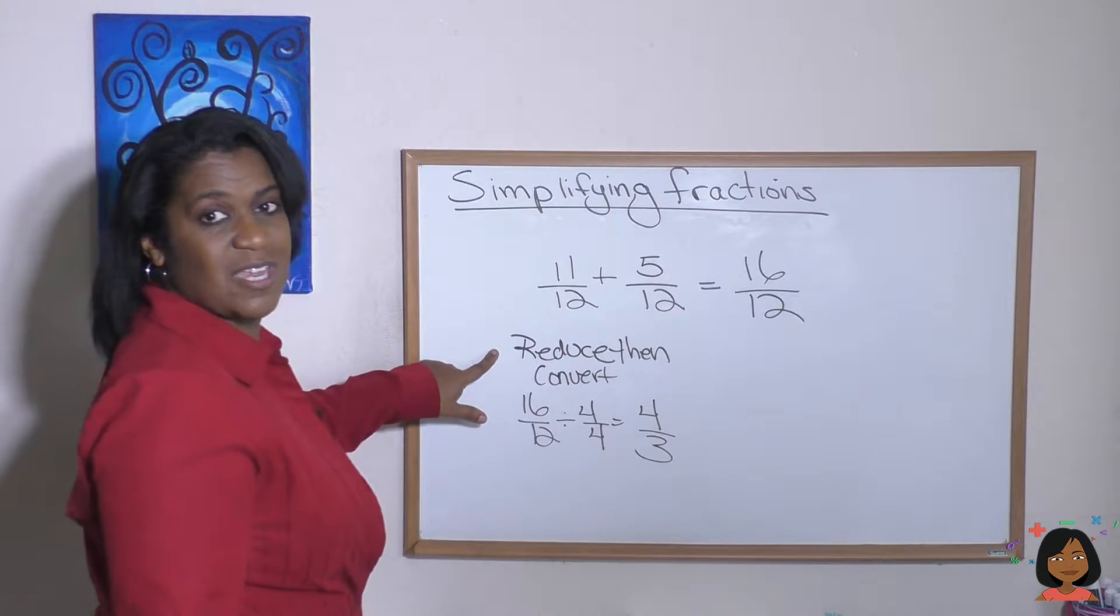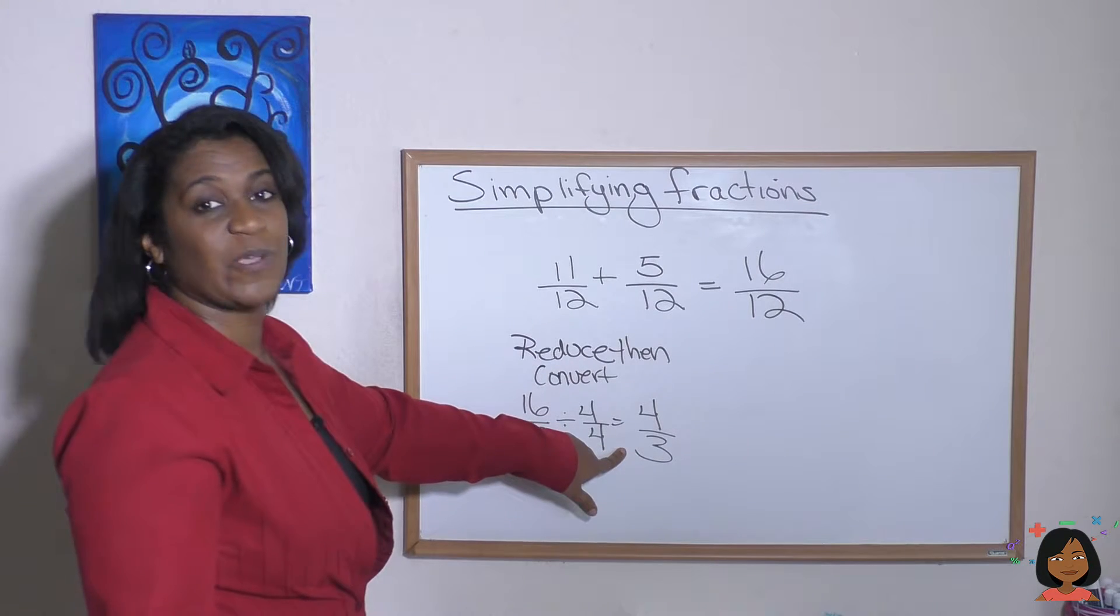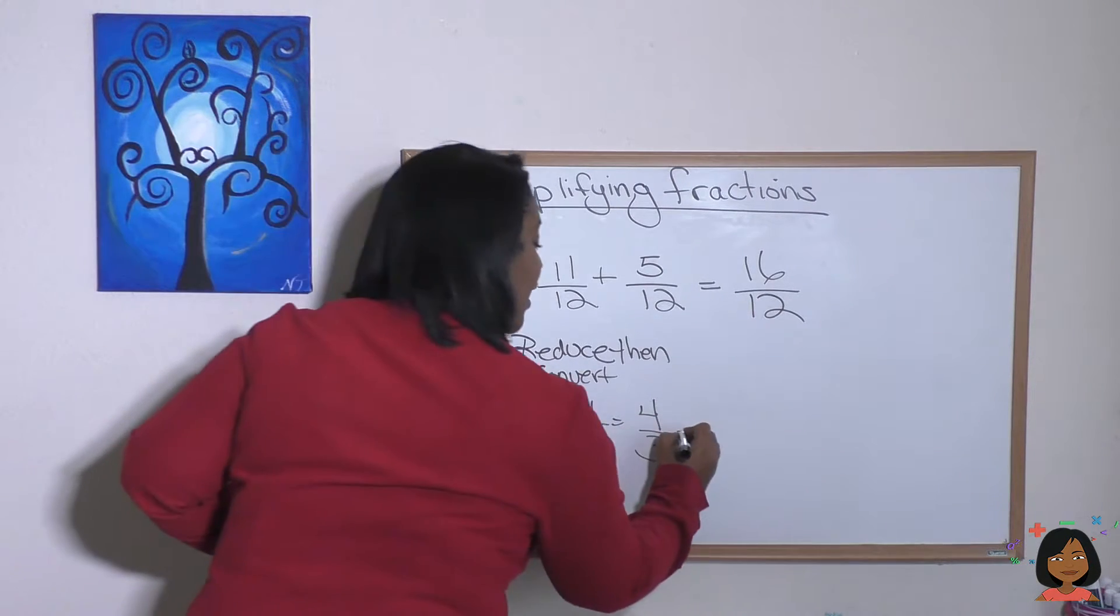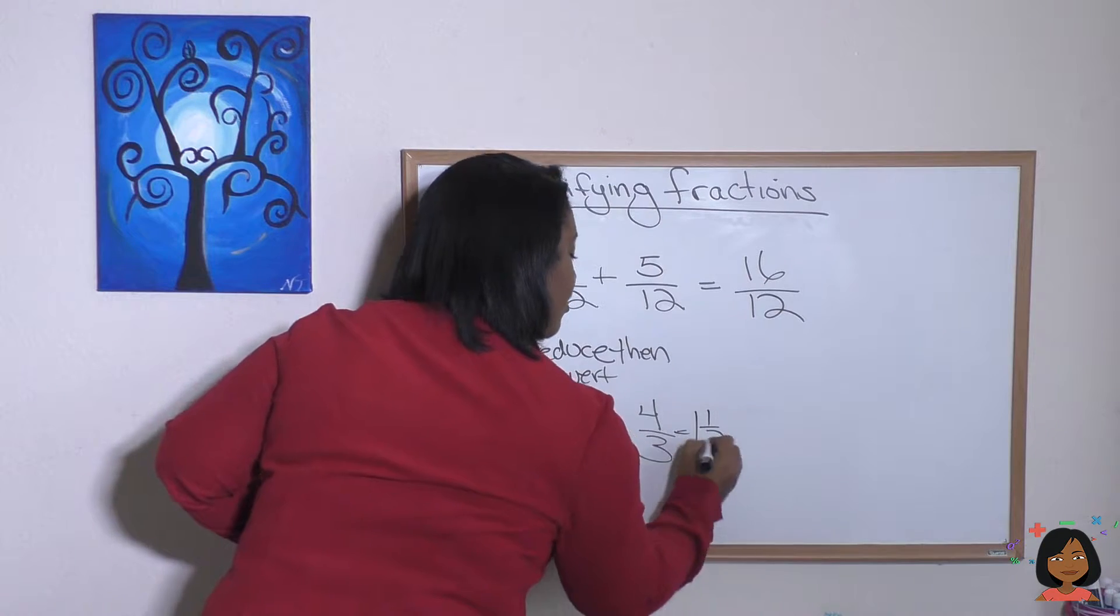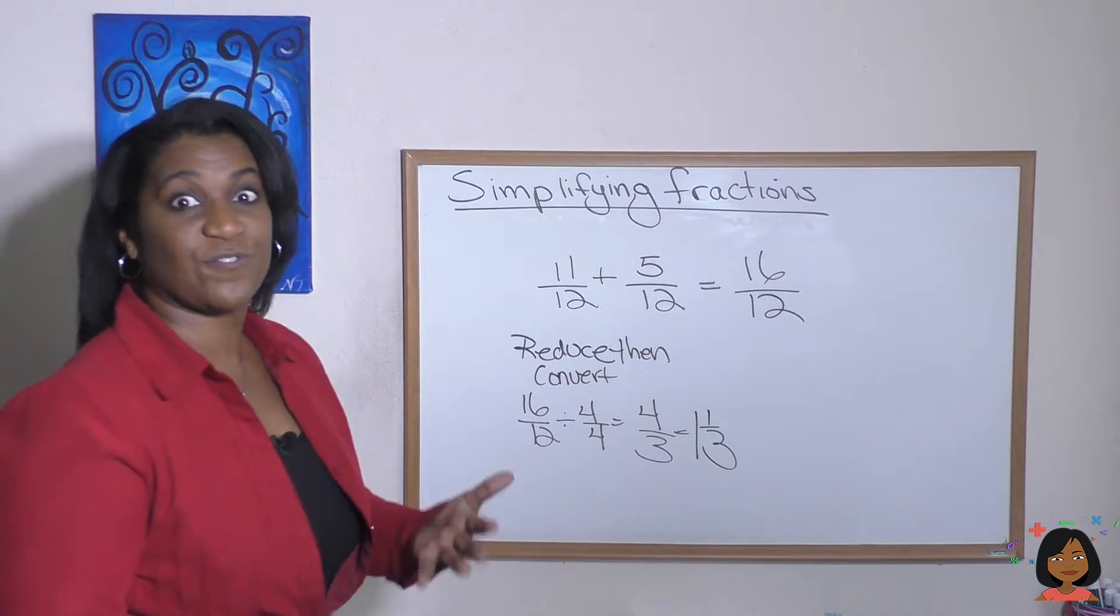So we reduced, and now we're going to convert. We see that we have a mixed number here. So this is going to end up being one and one third. That's how we can reduce first, then convert.